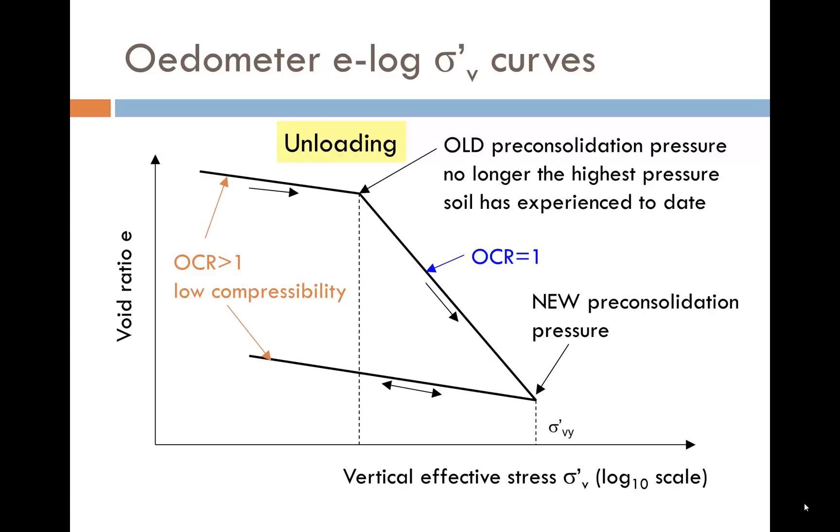While we have already passed the pre-consolidation pressure of the soil when it was in the ground, we can create a new one for this particular sample by unloading as shown. Once we unload, the soil is once again over-consolidated, OCR greater than 1. The more we unload, the more over-consolidated the specimen becomes.